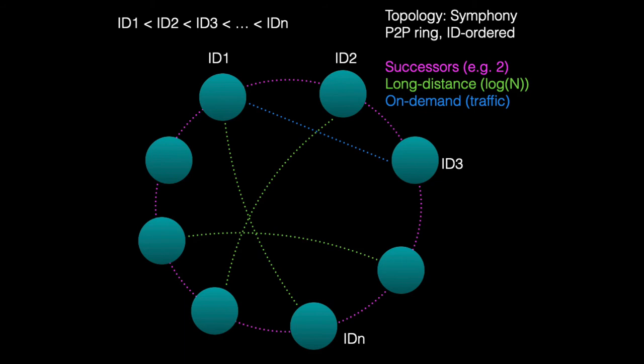Successor and long-distance links together allow the network to be scalable. With only log-n links per node, the network allows an average path between any two nodes of also log-n hops.